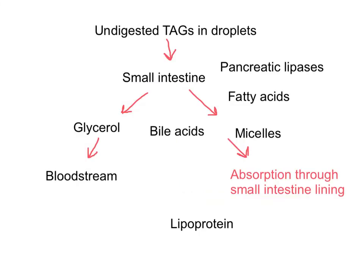The metabolism of lipids is not as straightforward as it is for carbohydrates. Once we ingest lipids, they go through the mouth, and droplets form in the stomach. Digested triglycerides form droplets that can be hydrolyzed by pancreatic lipases in the small intestine. This will produce glycerol units that can enter the bloodstream. Additionally, small fatty acids can enter the bloodstream as they are hydrophilic.